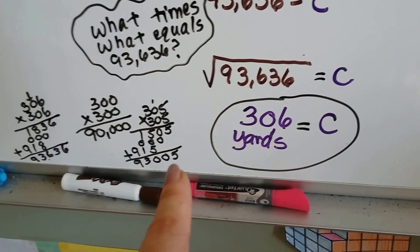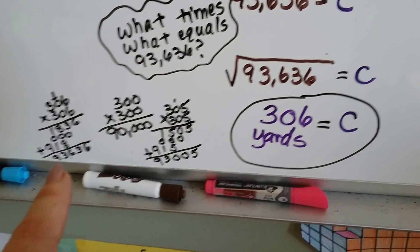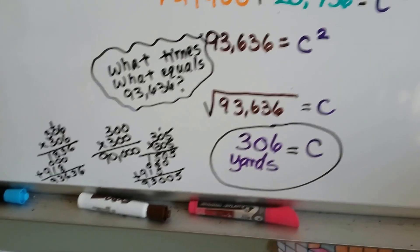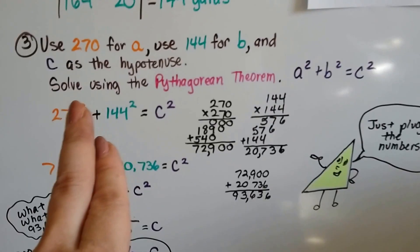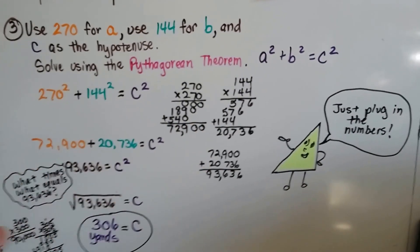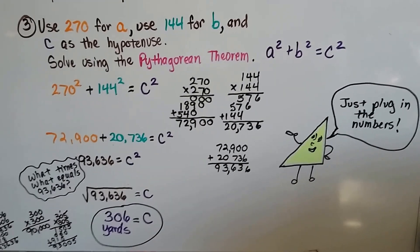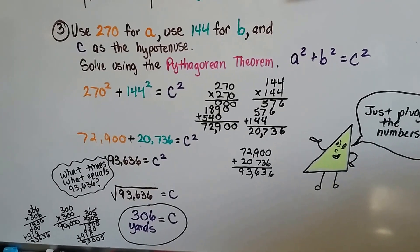So I tried 305 times 305, and I got 93,005. It's close, but not quite. So I tried 306, and look, 93,636. So it came out as 306 yards. That's how far away her house is from the beach. So all we had to do was plug the numbers in and use the Pythagorean theorem. So basically what we did was the distance formula.